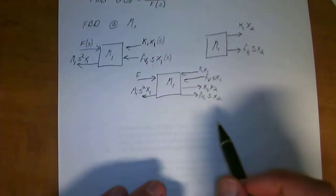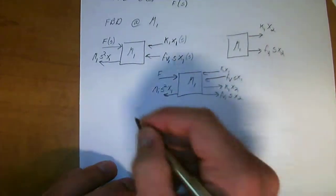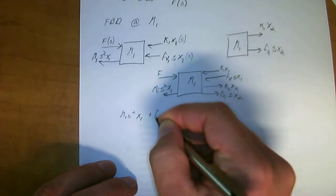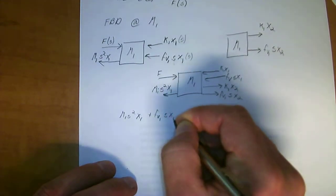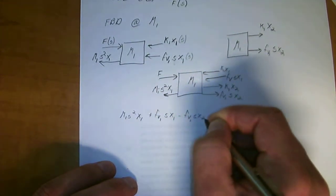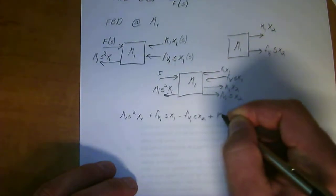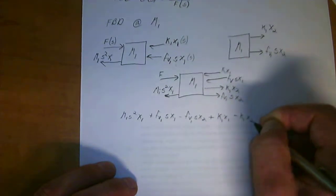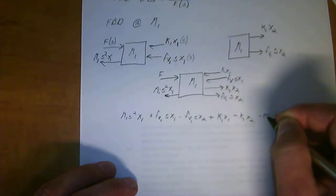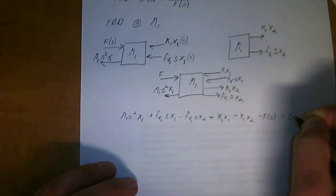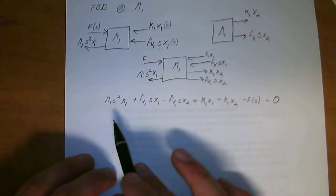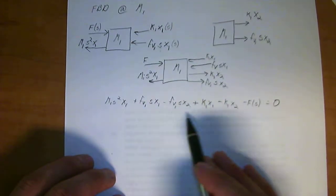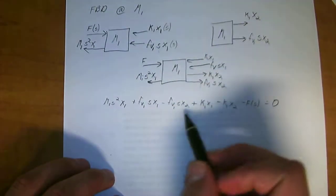So if you go ahead and take all these values and put them into an equation, you'll find that it comes to m1 s squared x1, plus fv1 s of x1, minus fv1 s of x2, plus k1 x1, minus k1 x2, minus f of s. It's equal to 0. So just like you would in solids or statics or anything, you basically just sum the forces that are acting on this. And you get this equation right here.